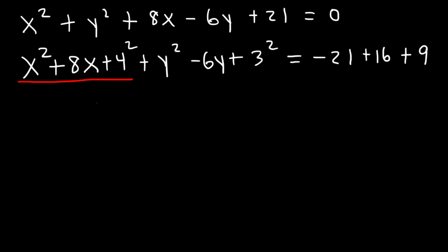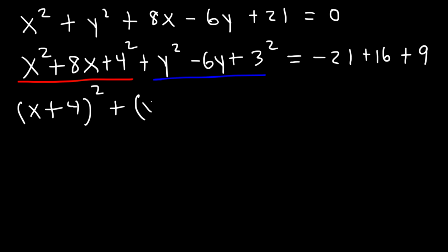Now let's factor x squared plus 8x plus 16. It's a perfect square trinomial. Two numbers that multiply to 16 but add to 8 are 4 and 4, so it factors as (x plus 4) squared. For the next perfect square trinomial, it factors as (y minus 3) squared. On the right side, 16 plus 9 is 25, and negative 21 plus 25 is 4.